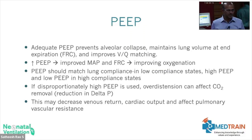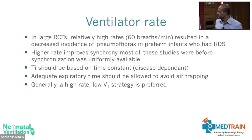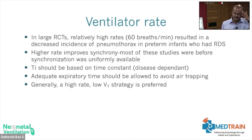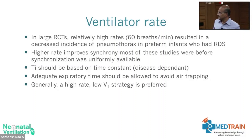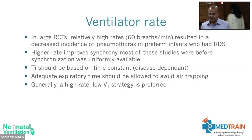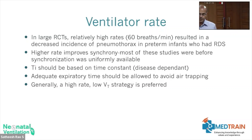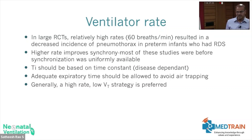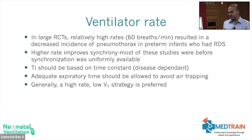Reduce and optimize the pressure instead. For ventilatory rate: over the past 25–30 years, most of us have used high-rate ventilation on conventional ventilation. A rate of 60 breaths per minute resulted in a reduced incidence of pneumothorax in preterm babies with RDS. RDS is a low-compliance condition so the time constant is short, allowing management with lower inflation times. As the baby gets older, or in meconium aspiration, the time constant is longer.